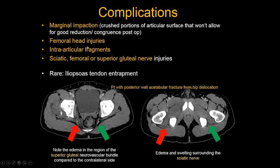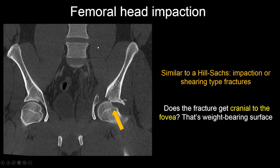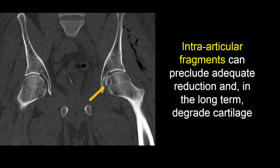Let's talk about a couple of complications. Femoral head impaction injuries are analogous to Hill-Sachs injuries in the shoulder — they can be impaction or shearing-type fractures. When describing them, note size, location, and whether they are cranial to the fovea, since everything cranial to the fovea is considered the weight-bearing articular surface — involvement there worsens prognosis. Intraarticular fragments: when large, they can cause trouble with reduction. A normal hip shows equal joint space across the acetabulum, whereas a large intraarticular fragment prevents proper reduction of the femoral head, causing lack of congruence — it must be removed to achieve good acetabular congruence.